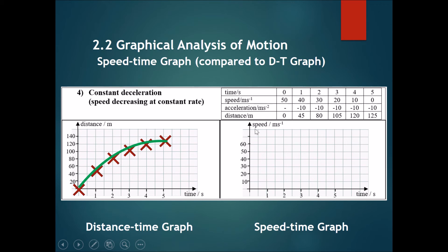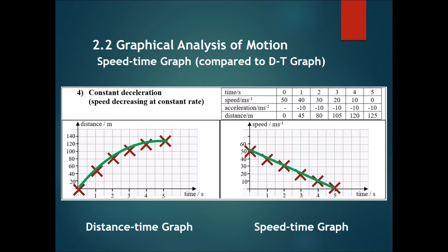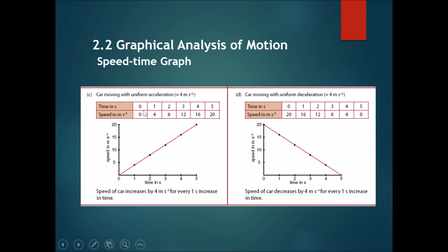On the speed-time graph for deceleration: at time 0 the speed is 50, it starts off at a high speed but decreases as it goes along. At time 1 the speed is 40, time 2 gives 30, time 3 gives 20, time 4 gives 10, and time 5 gives 0. This speed-time graph produces a perfect diagonal line that slopes downwards.